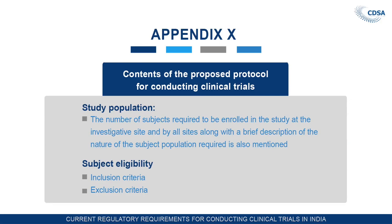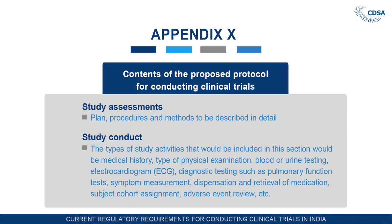The study population — number of subjects required to be enrolled at the investigative site and across all sites, along with a brief description of the nature of the subject population — must be given. Subject eligibility — inclusion criteria and exclusion criteria — specifying what criteria subjects must meet for inclusion and exclusion. The study assessment plan, procedures and methods should be described in detail, including types of study activities such as medical history, physical examination, blood or urine testing, ECG, diagnostic testing such as pulmonary function tests, symptom measurement, dispensation and retrieval of medication, subject cohort assignment, and AE review.